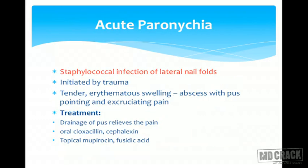Acute paronychia is a staphylococcal infection of the lateral nail folds, initiated by trauma. Remember: acute paronychia is always bacterial, whereas chronic paronychia is usually candidal or fungal. There is tender erythematous swelling of the proximal and lateral nail folds with abscess formation, pus pointing, and severe excruciating throbbing pain. The pus needs to be drained to relieve the pain. Patients are then put on oral cloxacillin and cefalexin, and topically mupirocin and fusidic acid.